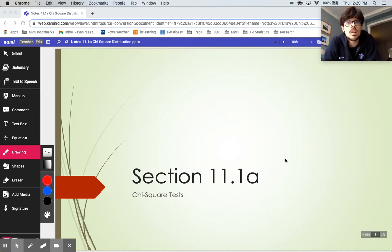Alright, so we are continuing our discussion here of the chi-square distribution. Last video we got a glimpse into what it does, what it's for. In the context of that M&M problem, here we're going to start to formalize things a little more.